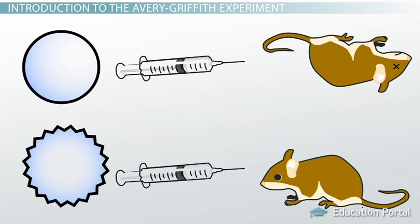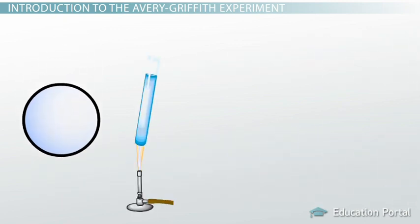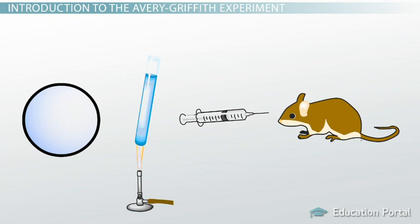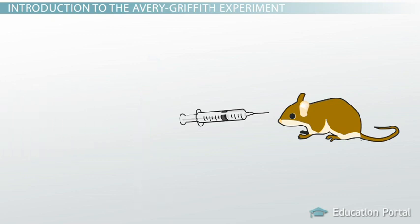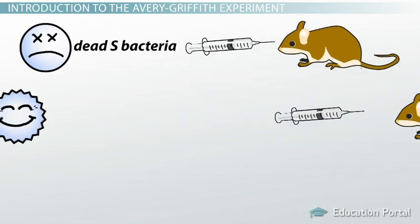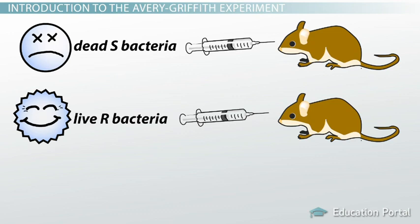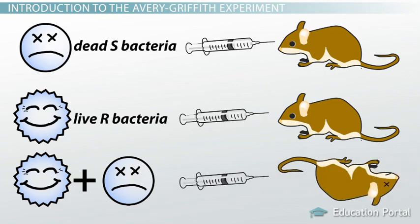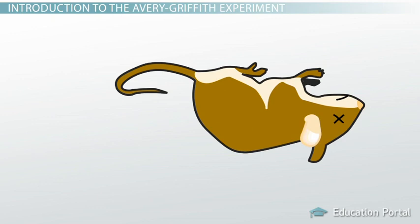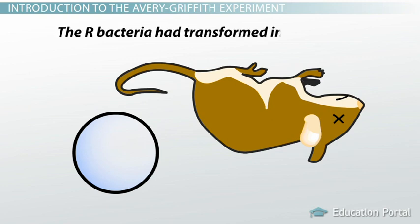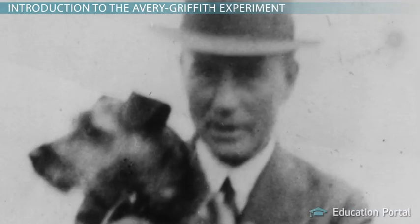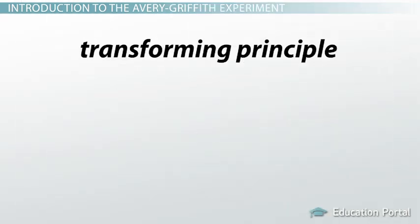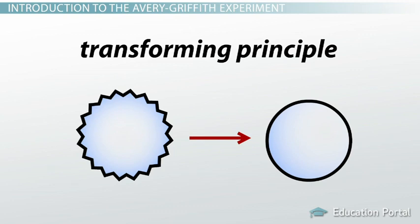Griffith knew that an infection of S-bacteria would kill a mouse. But if he first killed the S-bacteria by heating it and then injected the dead bacterial cell parts, the mouse survived. However, Griffith discovered that if he mixed living R-cells with dead S-cells and injected the mouse with the mixture, the mouse would die. When Griffith examined the blood of the dead mouse, he found living S-bacteria inside. Somehow the R-bacteria had changed into S-bacteria. Griffith concluded that some kind of transforming principle was responsible for the change.